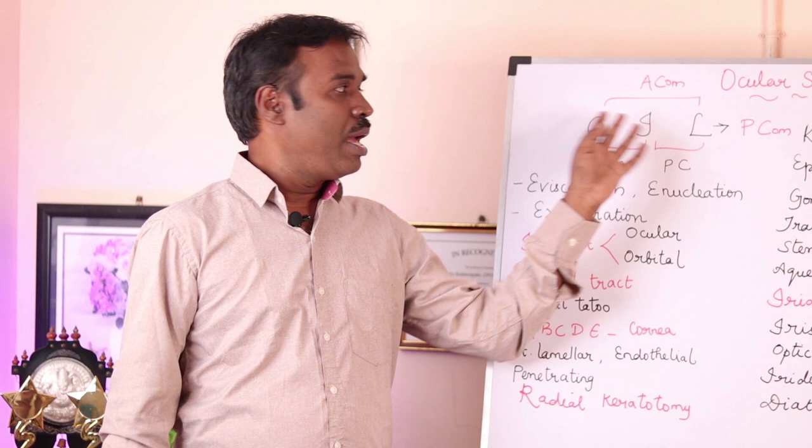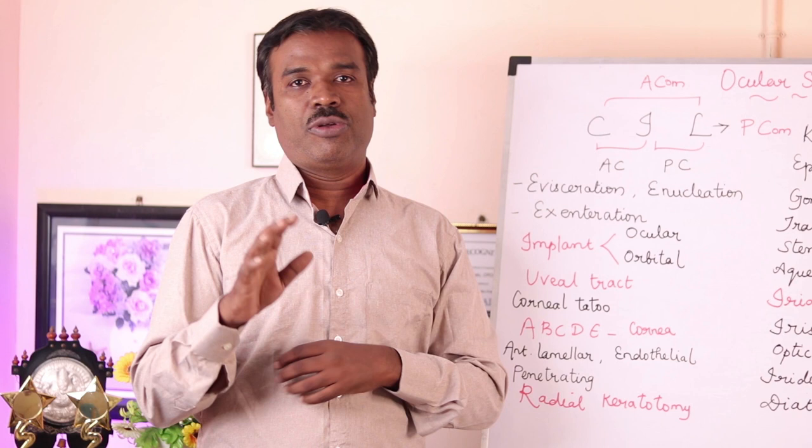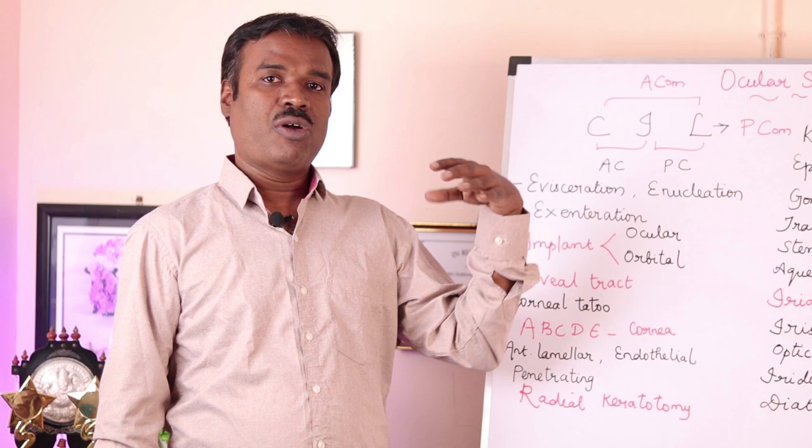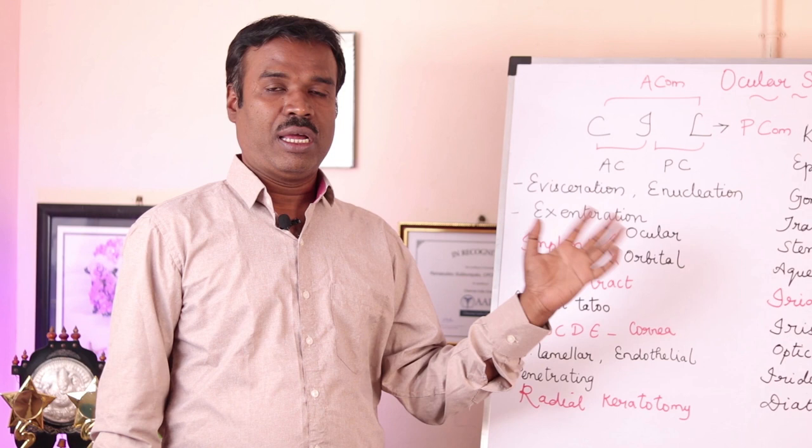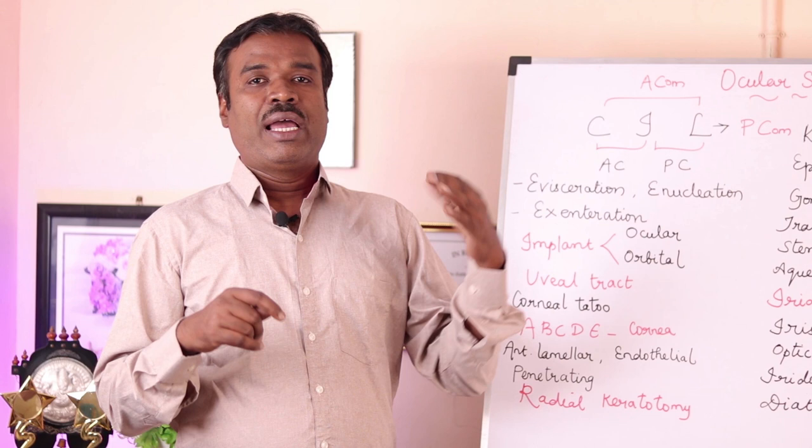Posterior to the lens becomes the posterior compartment. The aqueous fluid that normally drains from the anterior compartment drains via a structure called the trabecula. This trabecula is a tissue that lies beneath the cornea and helps in the drainage of aqueous fluids.